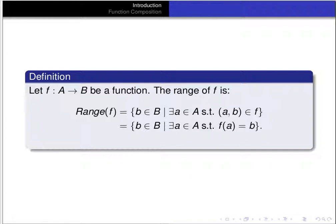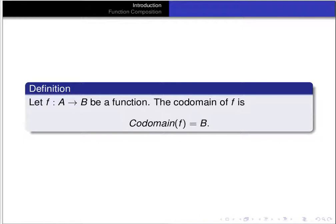The range is the collection of all elements b of B such that for some a in A, (a, b) is in f — equivalently, the set of all b in B such that f(a) = b for some a in A. Domain and range should be familiar. We also have the codomain of a function. If f from A to B is a function, the codomain of f is simply B — it's the third component of the triple (f, A, B).